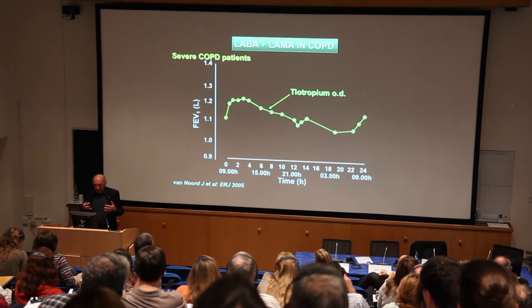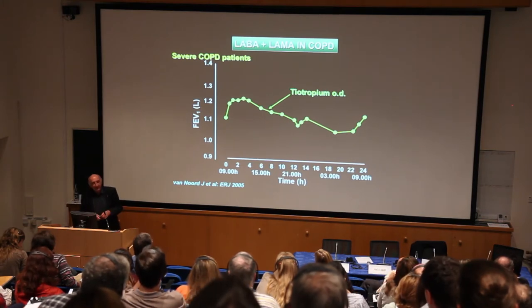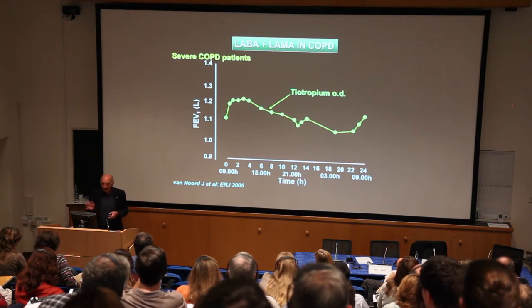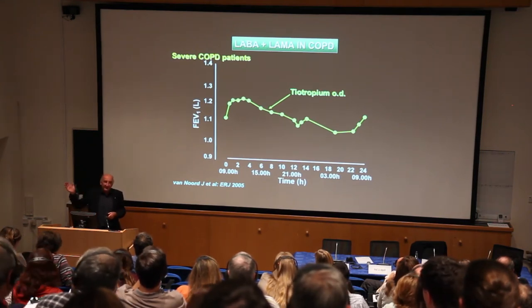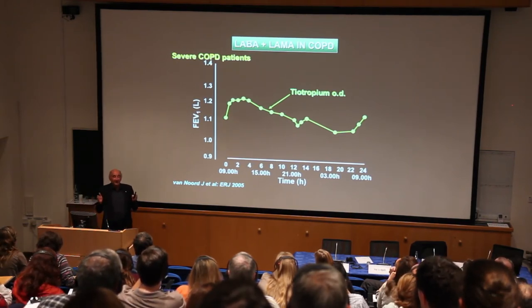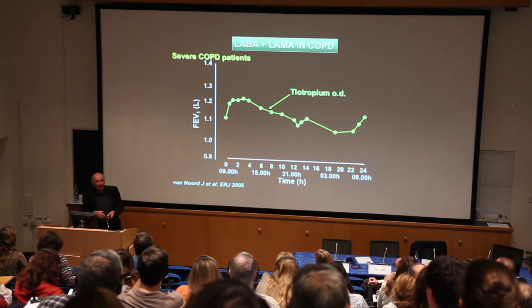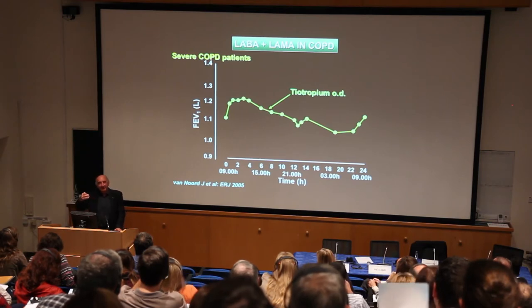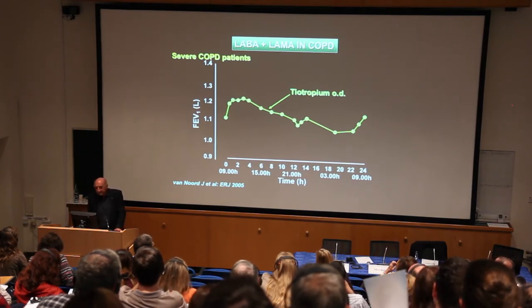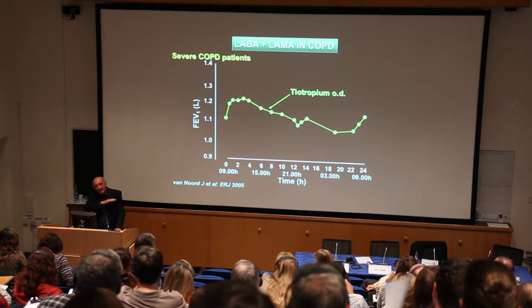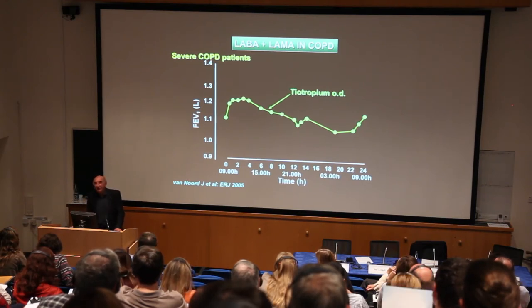Tiotropium is obviously a once-a-day drug. In our studies in asthma, initially with Brian O'Connor, we showed it lasted for three days, which is actually the duration of life of a muscarinic receptor. So it's essentially an irreversible anticholinergic and you recover from it by making new receptors. You may just reduce the synthesis of receptors, which is why you get such effective and prolonged bronchodilation.